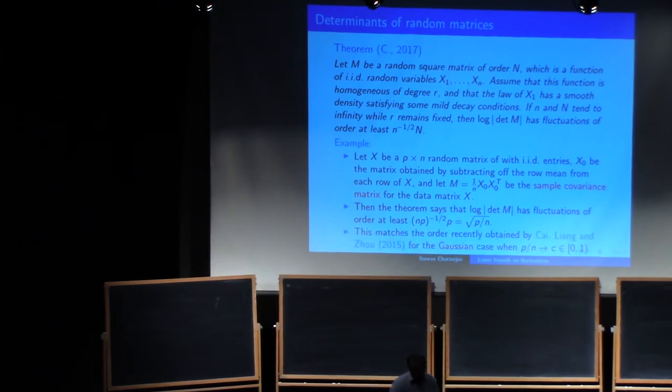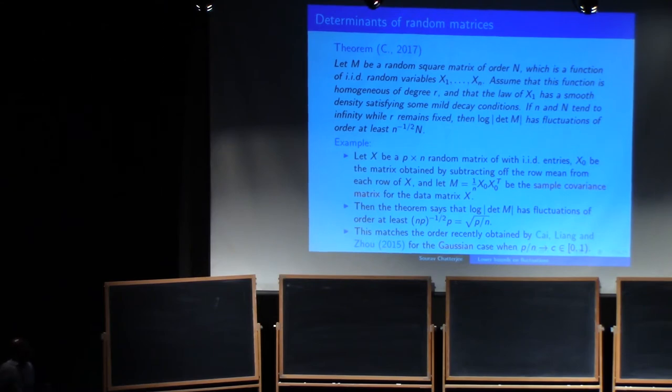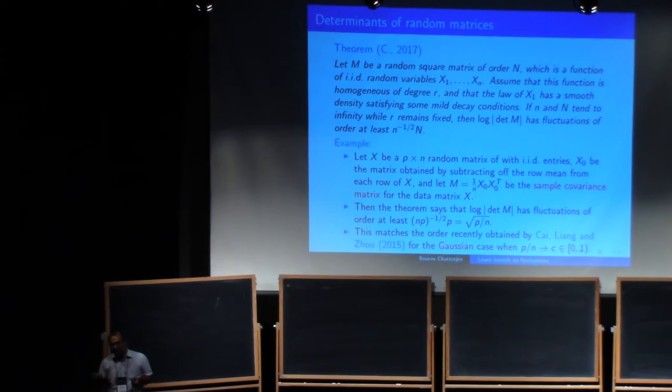And this is actually the right answer. So I was surprised that for sample covariance matrix, for Wigner matrices, it has been resolved quite recently. You know, there was a paper of Tao and Vu using four moments, and then generalized to two moments by Van Vu and one of his co-authors for Wigner matrices. But for sample covariance matrices, this is the log determinant of a sample covariance matrix is an important object in statistics. It's quite an important object.